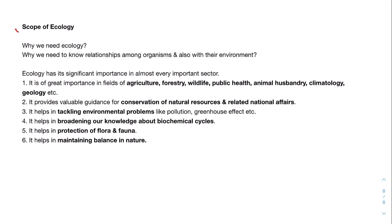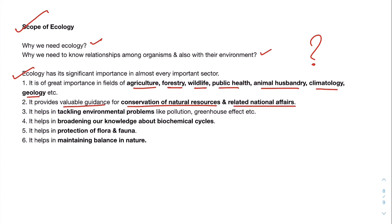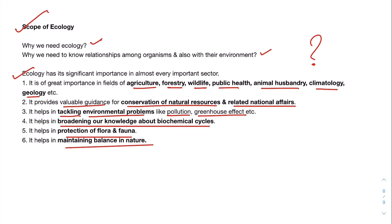Lastly, we have the scope of ecology — why we need ecology and why we need to know the relationships among organisms and their environment. Ecology has significant importance in almost every important sector: agriculture, forestry, wildlife, public health, animal husbandry, climatology, geology, etc. It provides valuable guidance for conservation of natural resources and related national affairs, helps in tackling environmental problems like pollution and the greenhouse effect, broadens our knowledge about chemical and biochemical cycles, and aids in protection of flora and fauna and maintaining balance in nature. That's all for this video. Thank you so much.